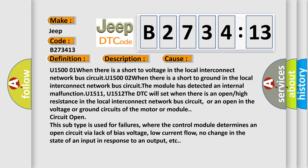U15001, when there is a short voltage in the local interconnect network bus circuit. U15002, when there is a short to ground in the local interconnect network bus circuit. The module has detected an internal malfunction.